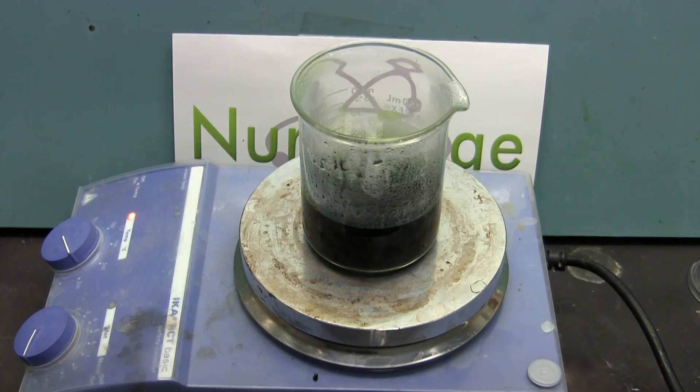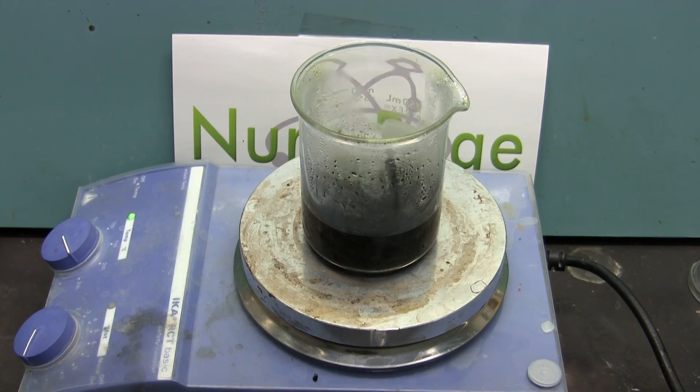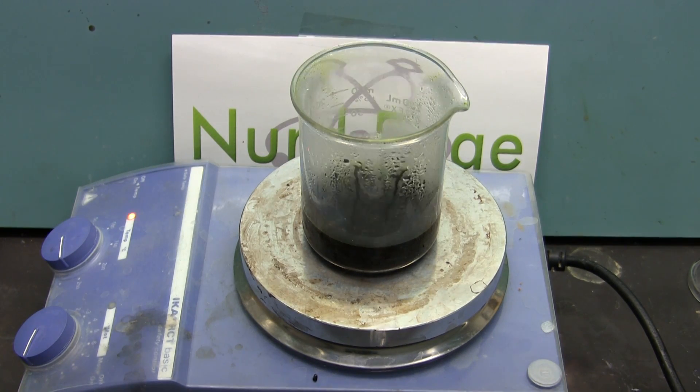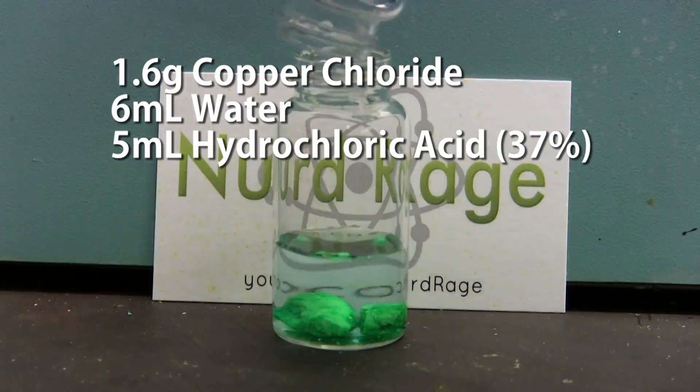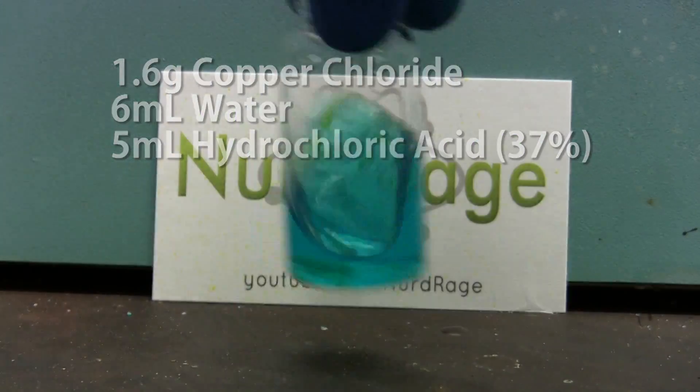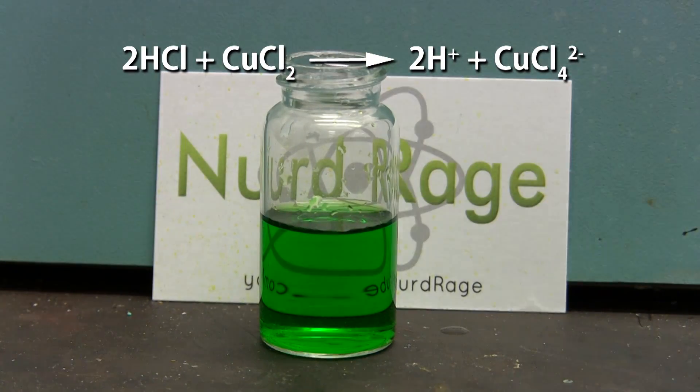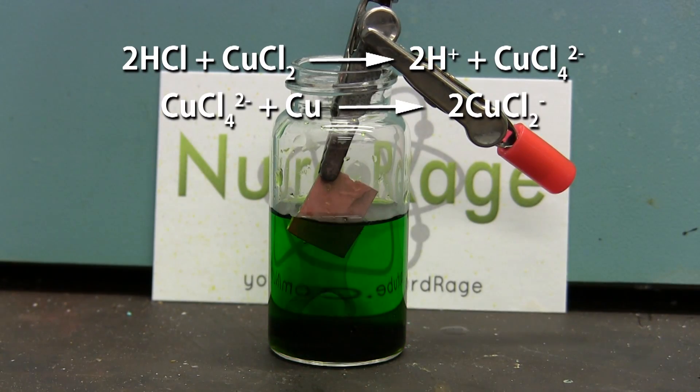The second metal chloride family etchant is copper chloride and hydrochloric acid. You can simply evaporate or boil down the spent peroxide and hydrochloric acid etchant from earlier into a highly concentrated solution or react fresh copper chloride with hydrochloric acid. The hydrochloric acid is necessary since it reacts with the copper chloride to make tetrachlorocopper ions. It is these ions that react with copper and can disproportionate into dichlorocopper ions.